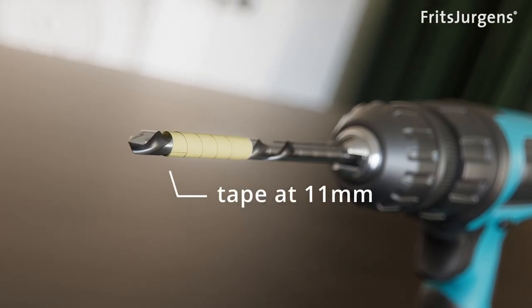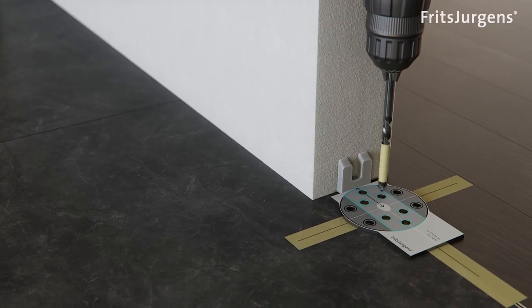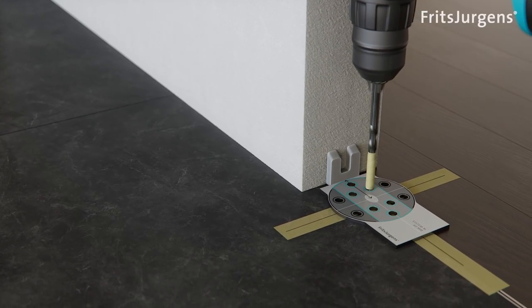We can use tape on the drill at 11mm. As the stencil is 3mm we know exactly when we've drilled 8mm deep.